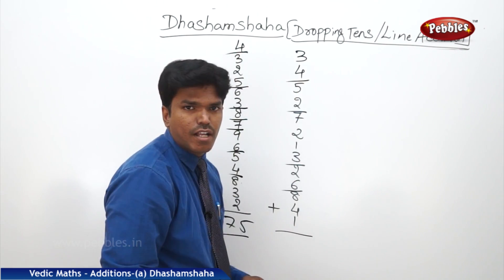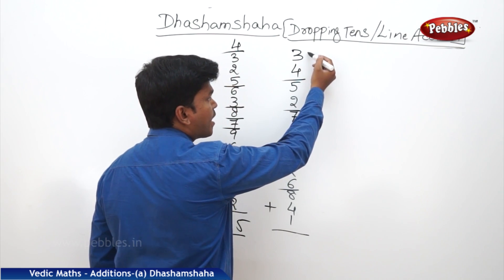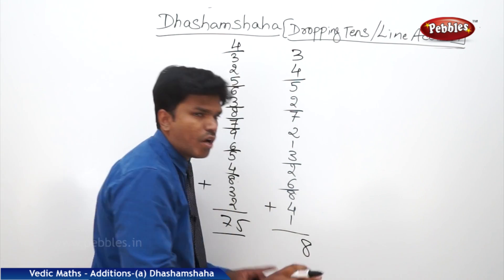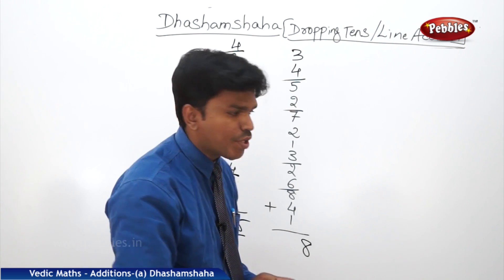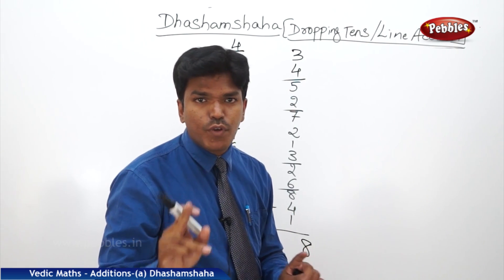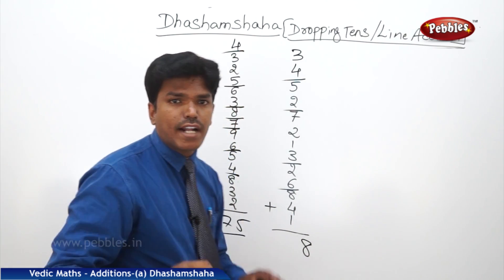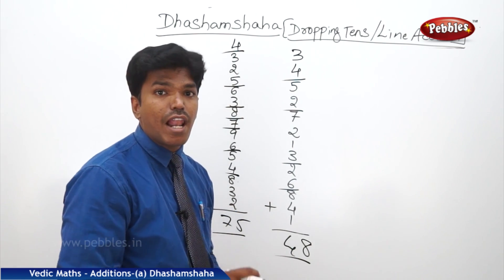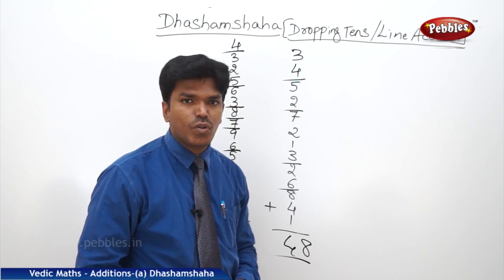6 plus 5? 11 — drop a 10. Remaining is 1. 1 plus 4? 5. 5 plus 3? 8. Lastly, remaining is 8. Write 8 here. Now count how many number of 10s there are. Don't count slowly — 1, 2, 3, 4. Don't count like that; if you count slowly, it takes the same time as before. Count 2 or 3 tens at a time. So 2 plus 2? 4. Answer is 48.